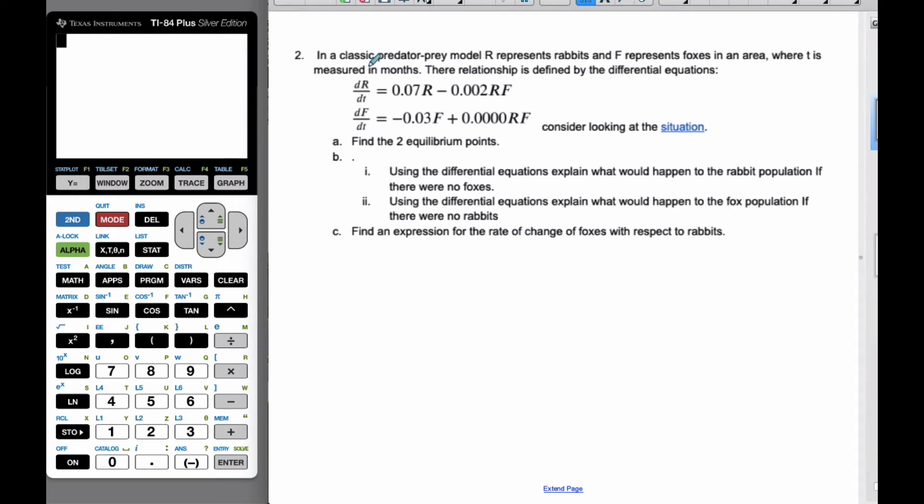Okay, so here we're talking about the classic predator-prey model, and we have R represents rabbits, and F represents foxes in an area, and T is measured in months. Their relationship is defined by this particular set of differential equations.